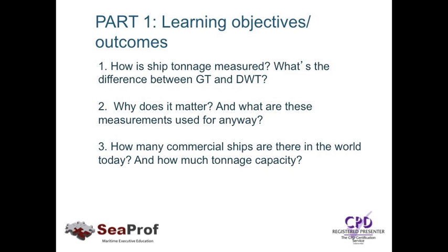Let's first look at Part 1 learning objectives and outcomes. First, how is ship tonnage measured? What's the difference between GT, gross tons, and DWT, deadweight tons? Secondly, why does it matter, and what are these measurements used for anyway? Thirdly, how many commercial ships are there in the world today, and how much tonnage capacity is there in the world?